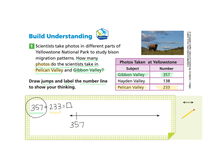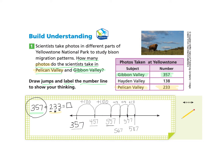Looking at 233, I know the place values: two hundreds, three tens, and three ones. I'll start by adding 100 to 357, landing at 457. Since we have 200, I add another 100, landing at 557. Then I look at the tens column — there are three tens — so I draw three jumps of 10, landing at 567, then 577, then 587.